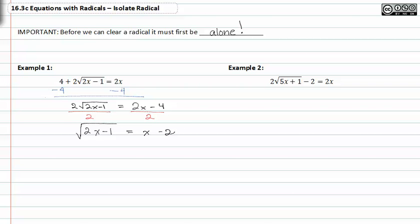Now we can raise both sides of the equation to the second power to undo the square root. We now have 2x minus one is equal to x squared minus four x plus four.